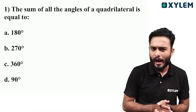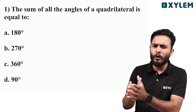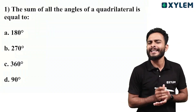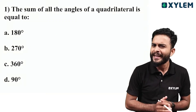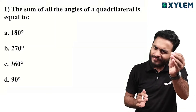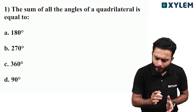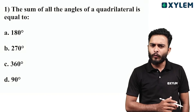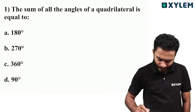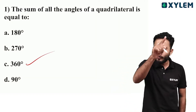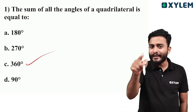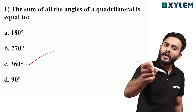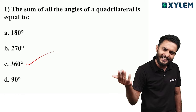I'm going to talk about the quadrilateral in this chapter. The sum of all the angles of a quadrilateral is equal to 360 degrees. One quadrilateral can be cut into two triangles, and one triangle is 180 degrees. So, two triangles are 2 into 180, which is 360 degrees.